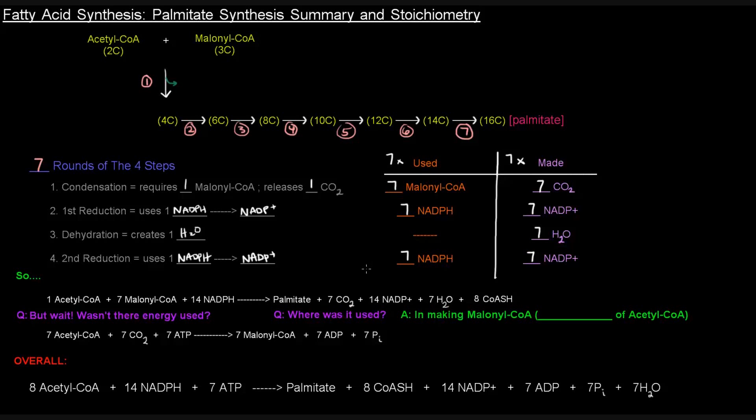So what's the overall stoichiometry? So at first, remember, only one acetyl-CoA, only one of the two carbon additions actually comes from acetyl-CoA. So we have one acetyl-CoA. The rest come from malonyl-CoA, and we used seven of those.